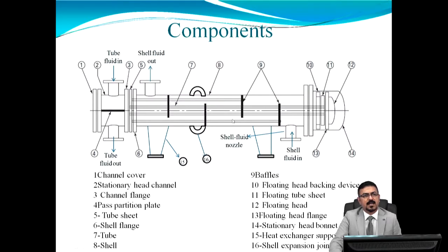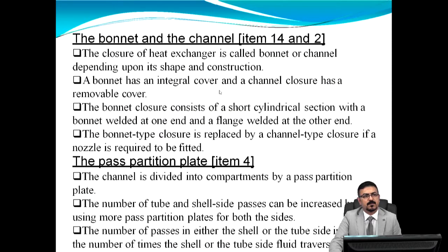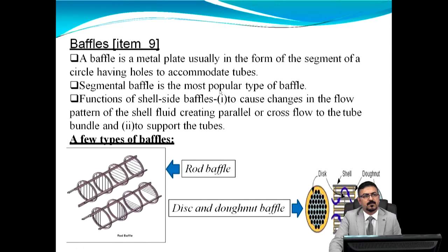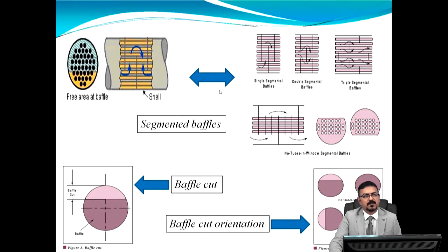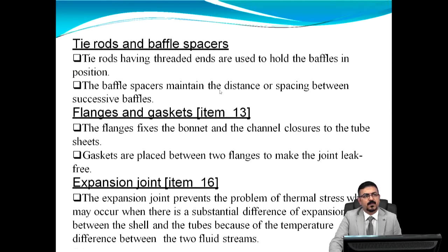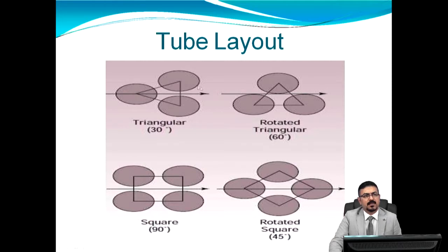This image shows components of a shell and tube heat exchanger. Tube layout patterns include square pitch at an angle (rotated square) or square pitch in line, depending on the design requirements.